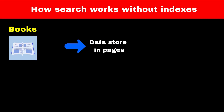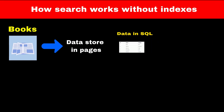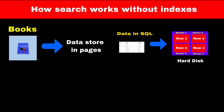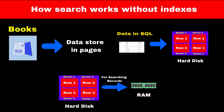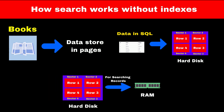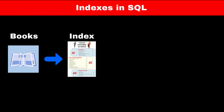Similar to books, where data is stored on different pages, SQL stores data in table format with rows stored in various sectors of a hard disk. Searching for something in the table involves bringing all these rows from sectors to the RAM and then searching into that table, which is a time-consuming process, especially in large tables. Just like books, we can use indexes in SQL.